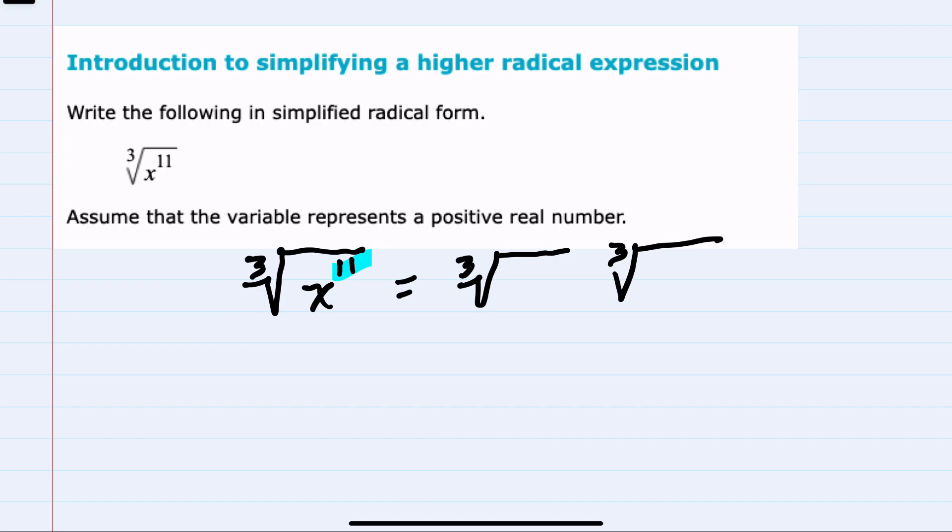The largest multiple of 3 that I can rewrite x to the 11th as would be x to the 9th power times x to the 2nd power. So if we were to multiply these, the 9 and the 2 would add to be the 11.